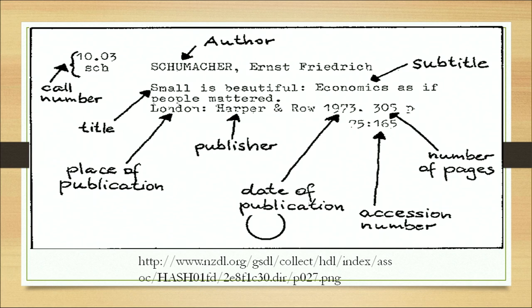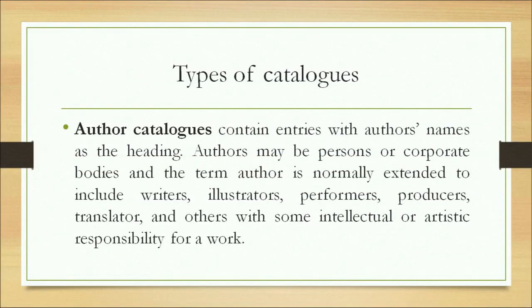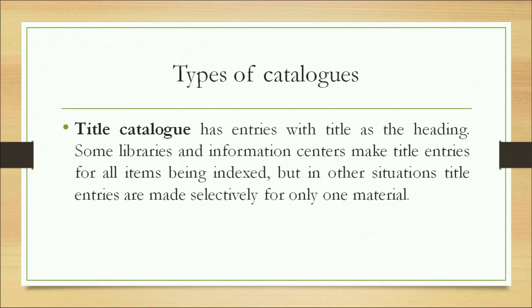There are different types of catalogs. An author catalog contains entries with authors' names as the heading. Authors may be persons or corporate bodies, and the term 'author' is normally extended to include writers, illustrators, performers, producers, and translators. A title catalog has entries with titles as the heading. Some libraries make title entries for all items, while in other situations title entries are made selectively.